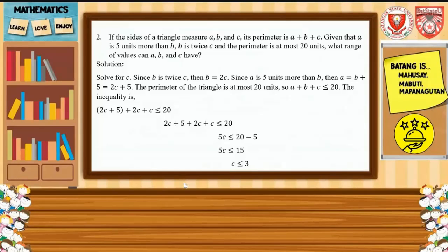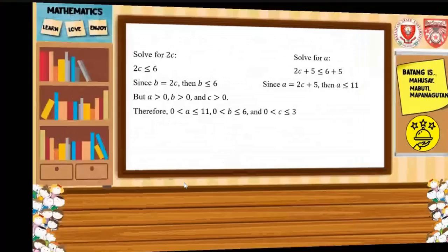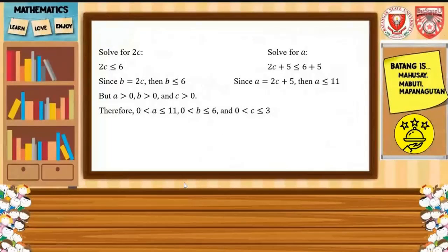Combining like terms: 5C plus 5 is less than or equal to 20. Transposing 5 to the right side: 5C is less than or equal to 15. Therefore, C is less than or equal to 3. Solving for B: since 2C is less than or equal to 6 and B equals 2C, then B is less than or equal to 6.